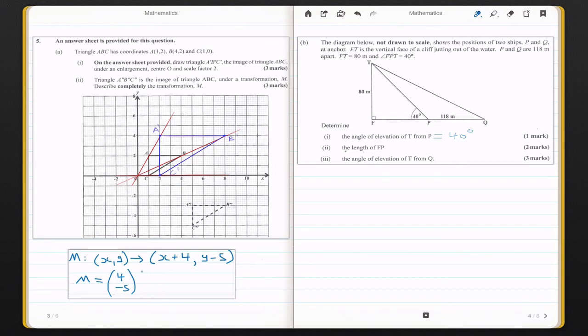Part two now asks us for the length of FP. So the length of FP would be this side here. We know that this is our opposite, this is our adjacent, and this is our hypotenuse. And we have a right angle triangle.